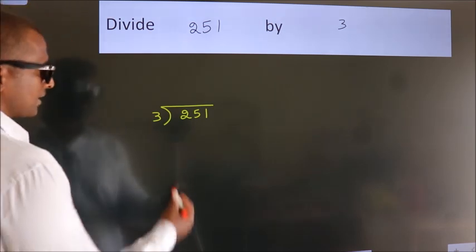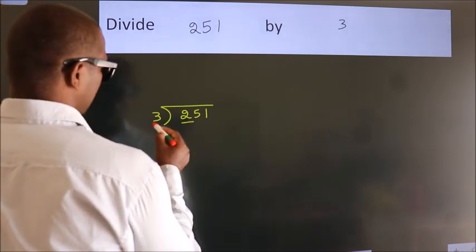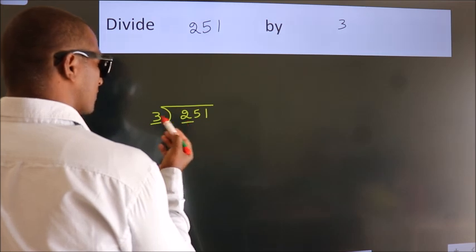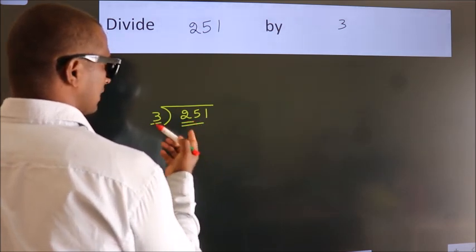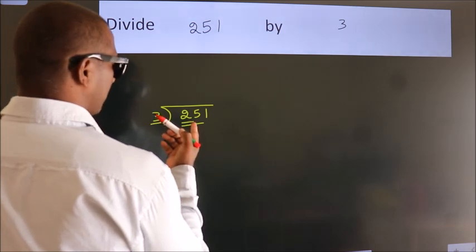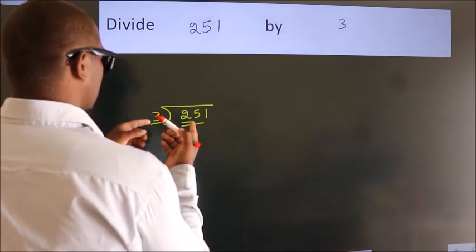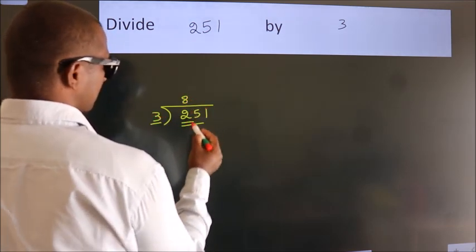Next, here we have 2, here 3. 2 is smaller than 3, so we should take 2 numbers: 25. A number close to 25 in the 3 table is 3×8=24.